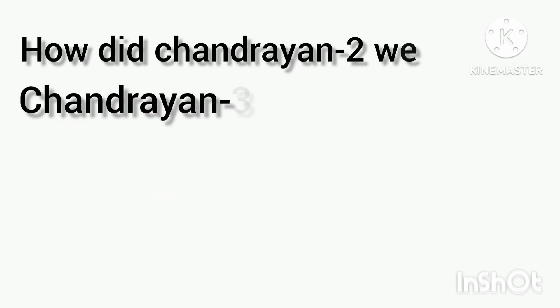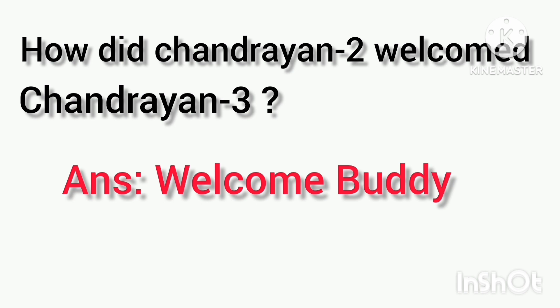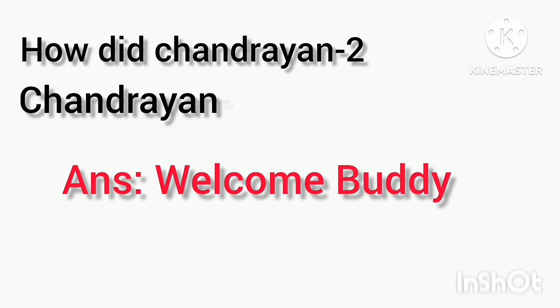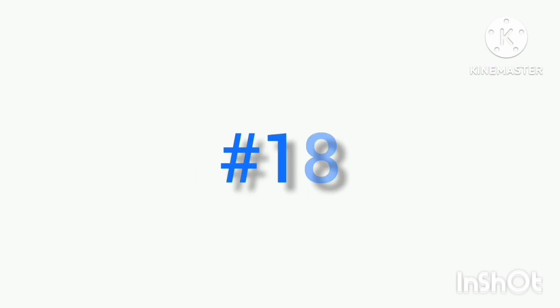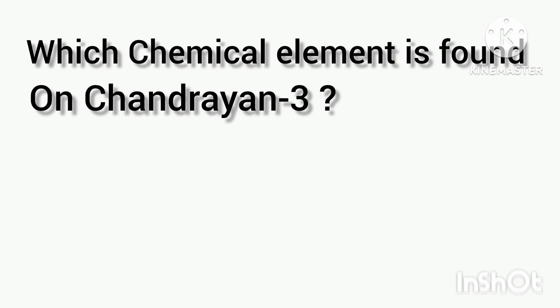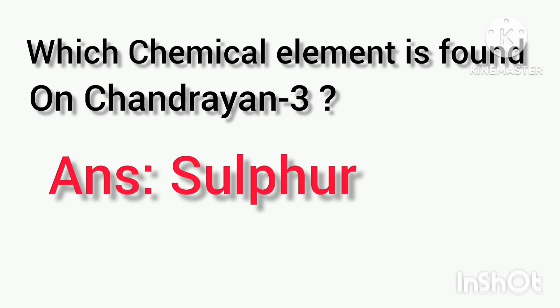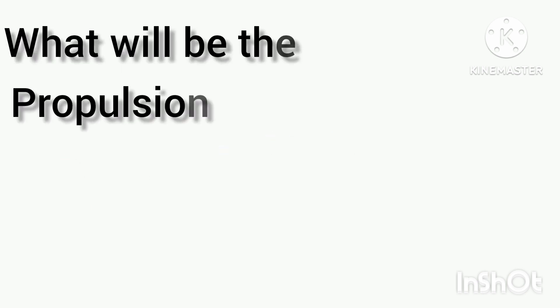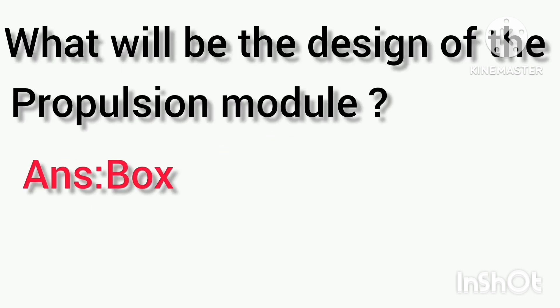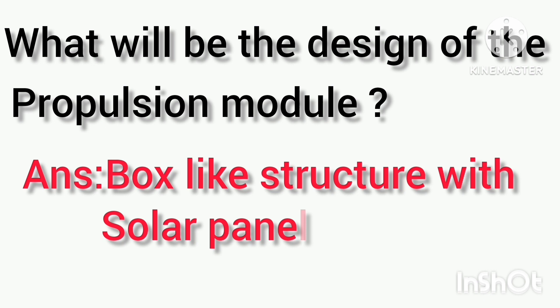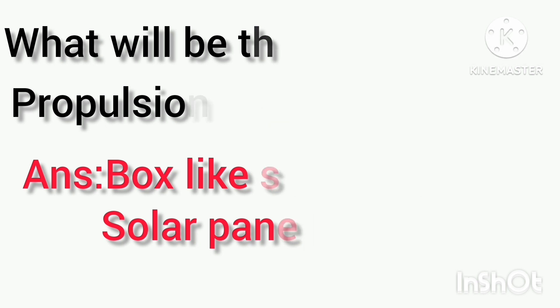The seventeenth one: how did Chandrayaan-3 welcome its predecessor Chandrayaan-2? It said 'Welcome buddy.' The eighteenth one: which chemical element was found by Chandrayaan-3? The answer is sulfur. The nineteenth one: what is the design of the propulsion module? The answer is a box-like structure with solar panels.